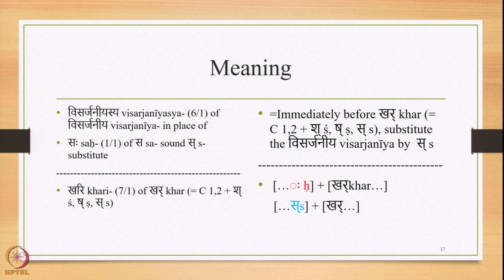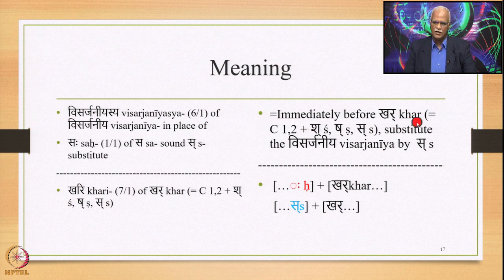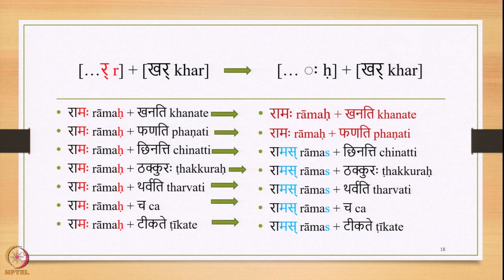This sutra Visarjaniyasya Saha has two padas — Visarjaniyasya and Saha — and the continued word is Khari (7/1 of Khara). The meaning of the sutra is: immediately before Khara — consonants 1 and 2 plus Sha, Sha and Sa — substitute the Visarjaniya by Sa. So Visarga plus Khara as input gives Sa plus Khara as output.